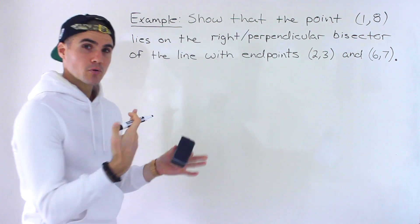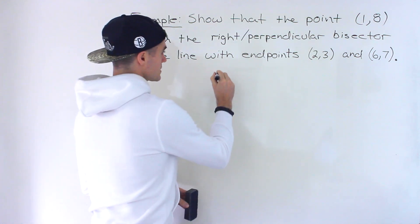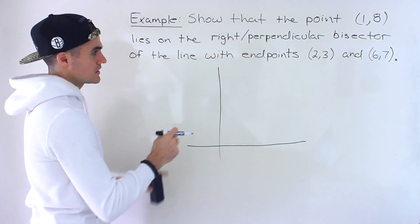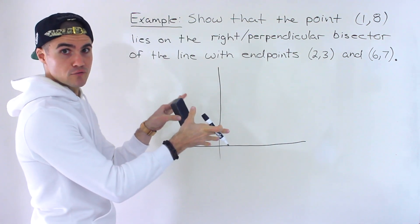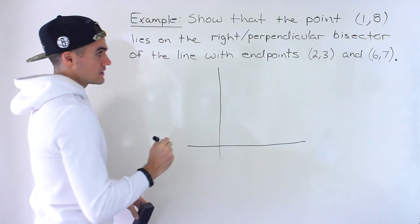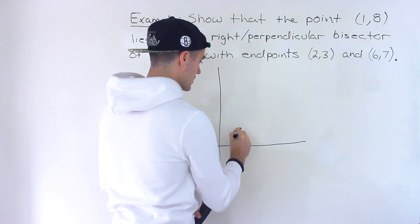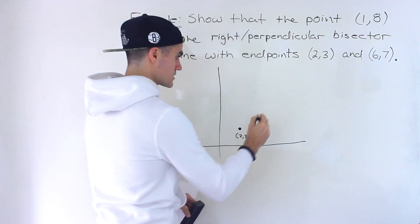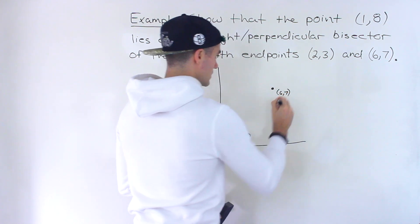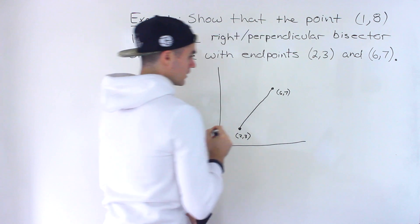There are actually multiple ways to do this question, so I'm going to show you the different ways. To start off, let's draw just a rough diagram of what's happening, and then it's going to be easy to visually explain what we're going to be doing before we get into the actual algebra. So let's draw this line with endpoints (2, 3) and (6, 7).